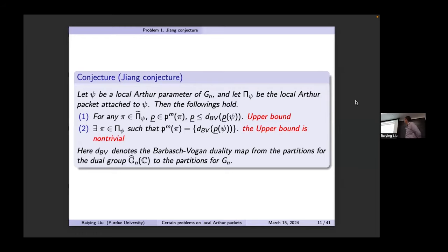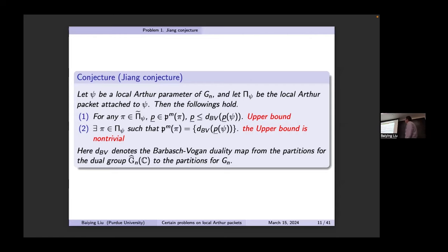Let's continue. So Johnson's conductor conjecture is a generalization of Shahidi's conductor conjecture. For a packet, looking at the packet, the DBV map gives an upper bound for the wave-front set of representations in the packet. This upper bound is related to a partition parameter — a partition of the dual group — and DBV maps it to the group itself. Part one says zero is an upper bound; part two says this upper bound is non-trivial and can be achieved by at least one representation.